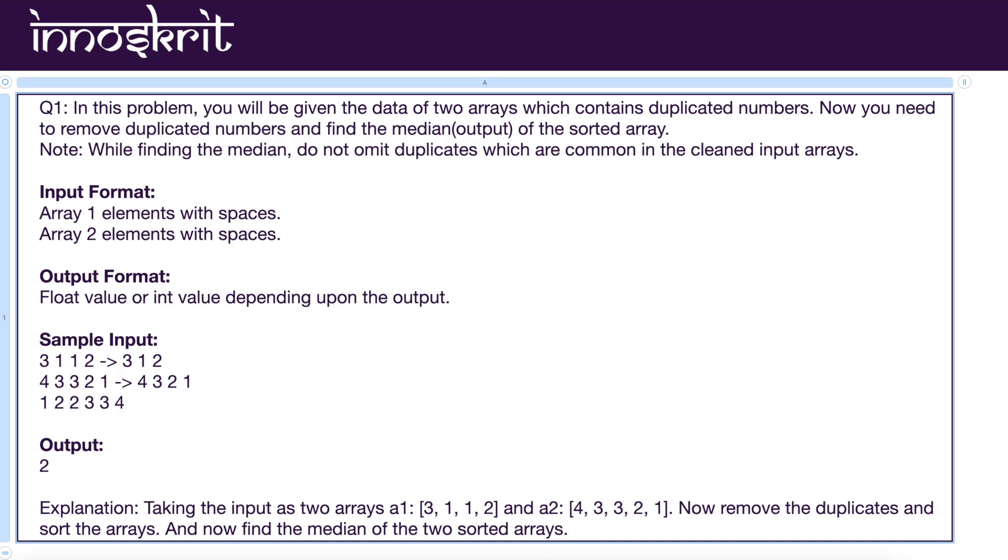So there are two ones. 1 1 2 2 3 3 and 4. Now if you look closely, the median of this array is 2 because there are three elements to the right and three elements to the left, and this is the median. So the answer is 2.